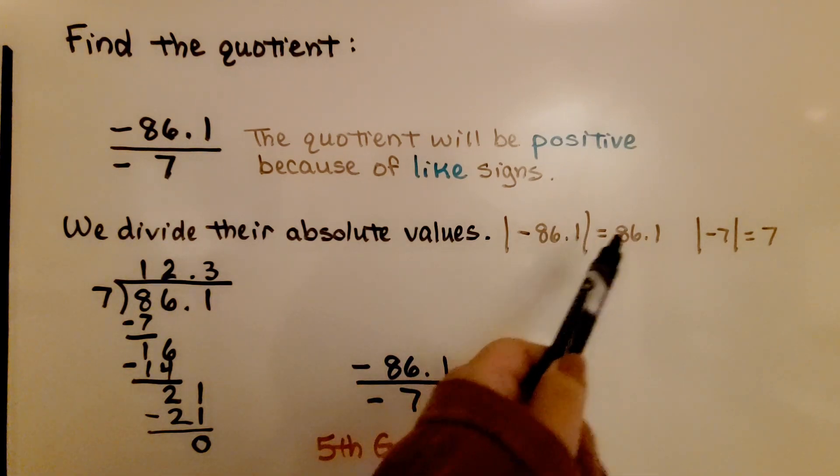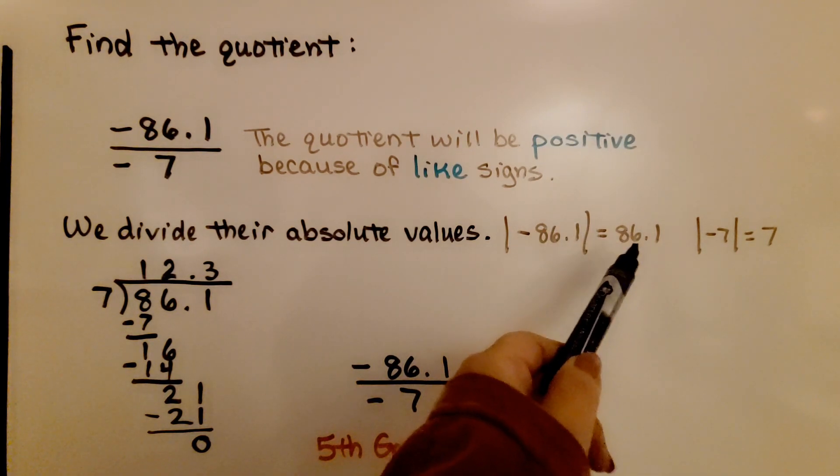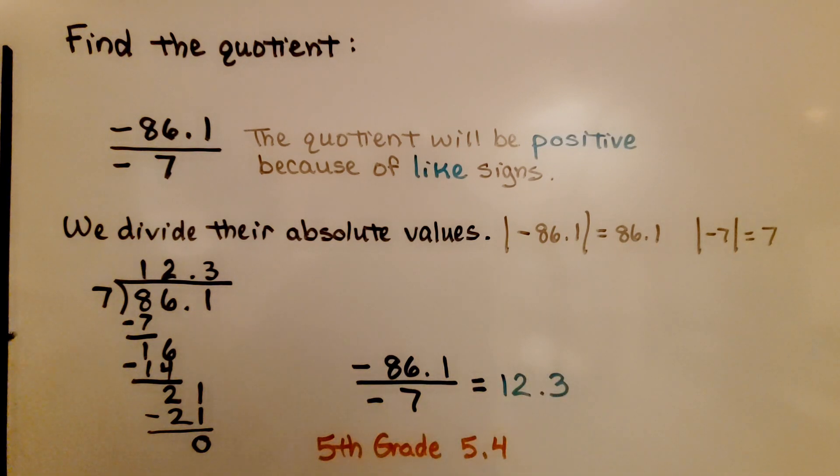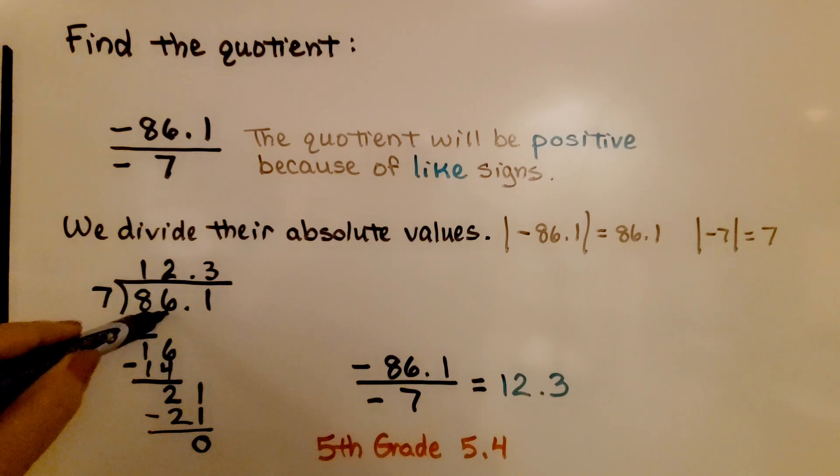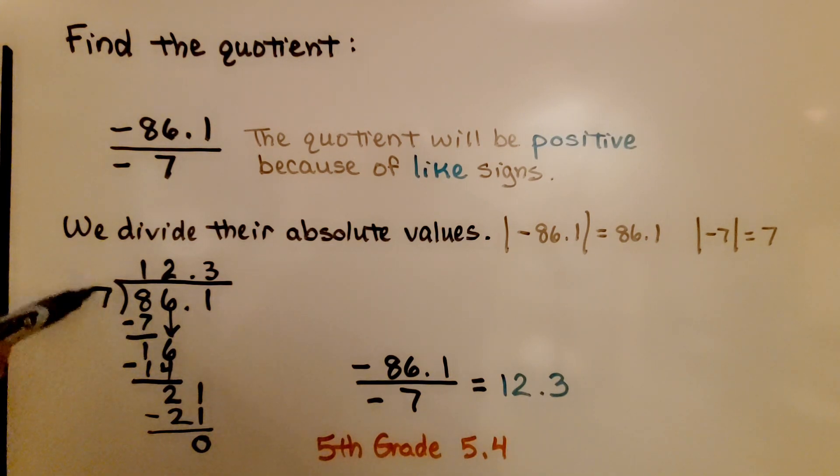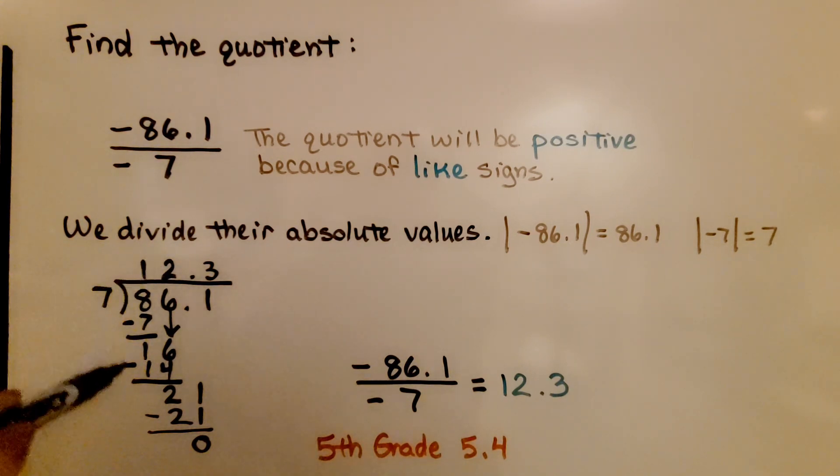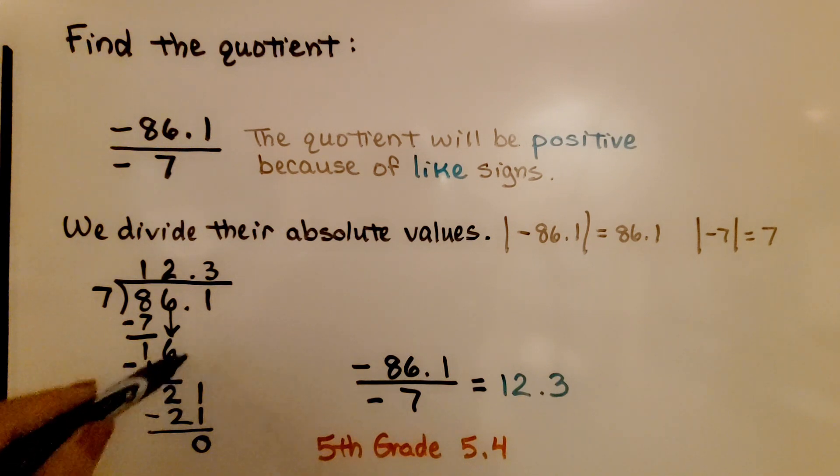We have 86.1 divided by 7. 7 fits into 8 one time. We subtract: 7 times 1 is 7 and get a 1. Now the 6 comes down. 7 fits into 16 two times. 7 times 2 is 14. We subtract the 14, get a 2.